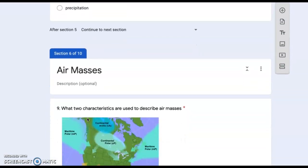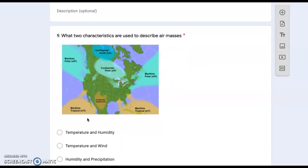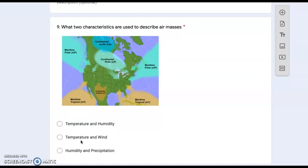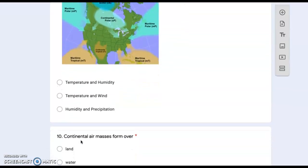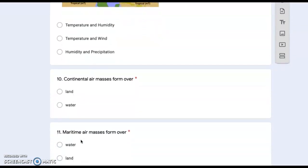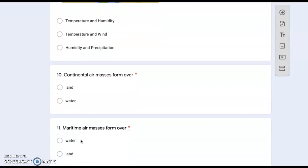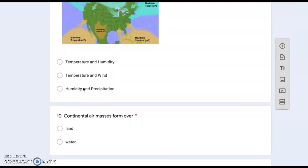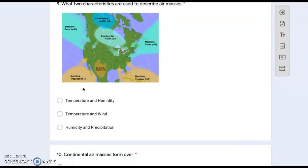Air masses. Number nine: what two characteristics are used to describe air masses? Temperature and humidity, temperature and wind, or humidity and precipitation? Number ten: continental air masses form over land or water? Look back at the diagram on number nine to help you answer that question.